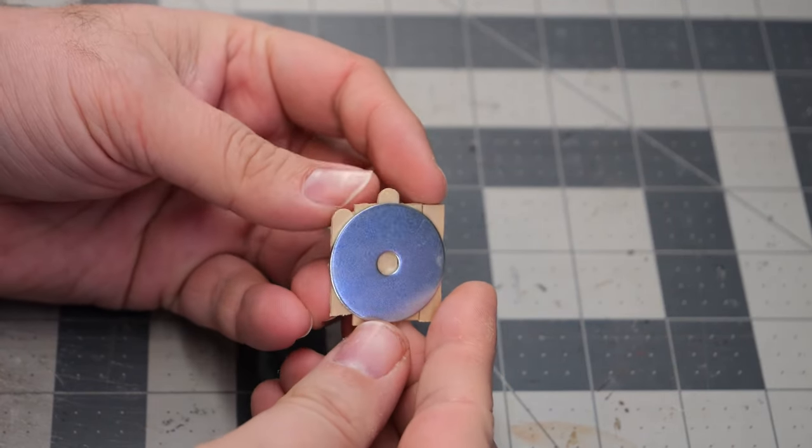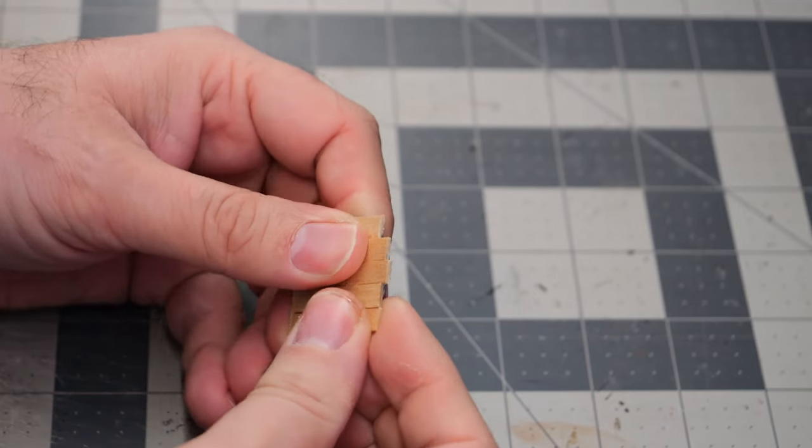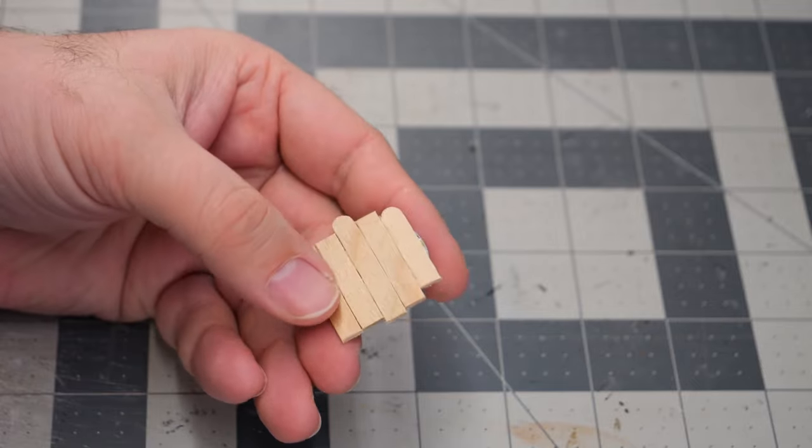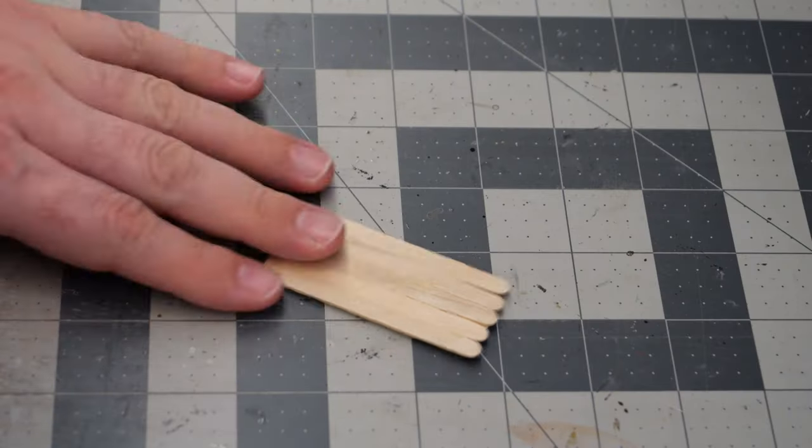And while that's happening, I did the same thing with one of the washers. This will give a very nice magnetic surface for any attachables to clip to.